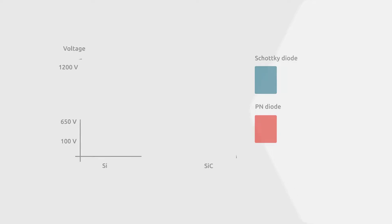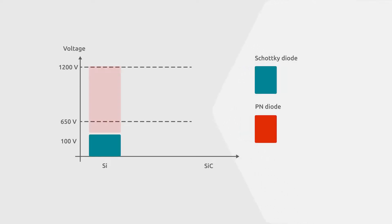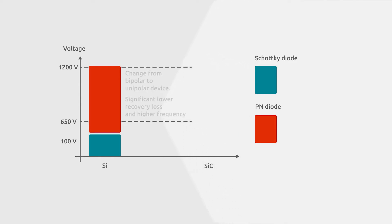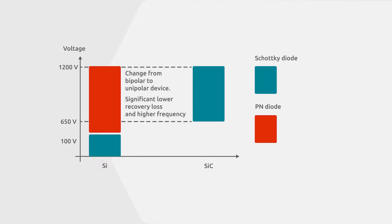The specific properties of silicon and silicon carbide have a significant impact on the switching performance of diodes at a given current and voltage rating. For power applications requiring a blocking voltage of 650V, silicon diodes need to be PN-based, while silicon carbide still allows the usage of unipolar Schottky structures. Due to the absence of minority carriers in the SiC Schottky diode, almost no minority carrier charge is stored in the junction.